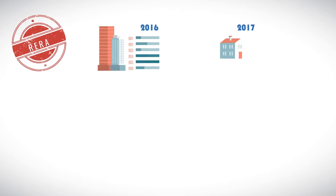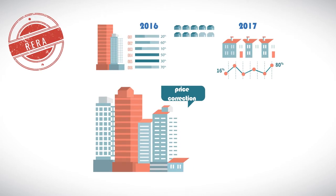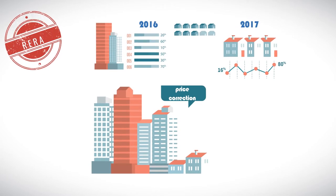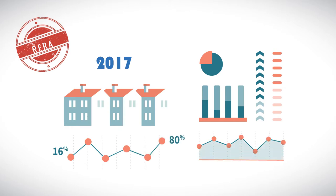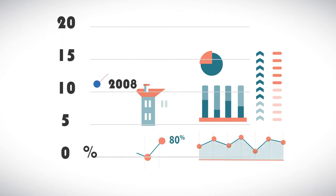Along with the implementation of RERA, 2017 has been a year which has seen price correction on most real estate, and it is no longer selling at the impractically high prices it commanded a few years ago. Home loan rates have also been cut.